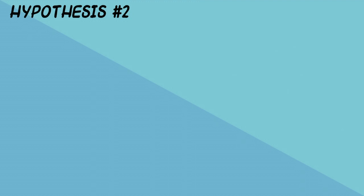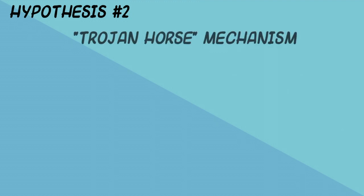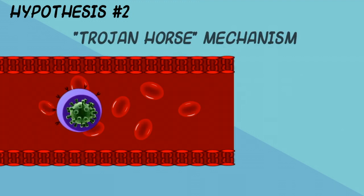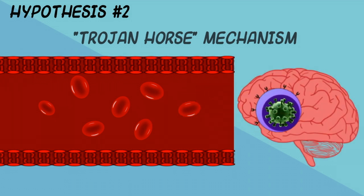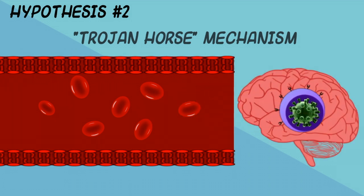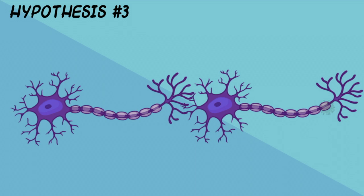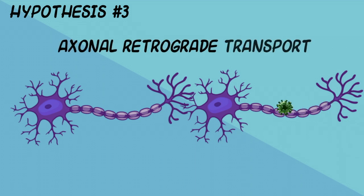It is also hypothesized that the infection of the central nervous system occurs through a Trojan horse mechanism in which the virus is transported by infected immune cells that traffic to the central nervous system. And lastly, it is possible that the virus spreads through direct axonal retrograde transport from infected peripheral neurons.